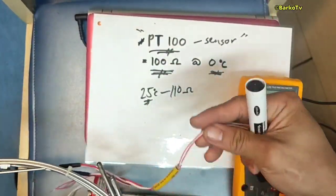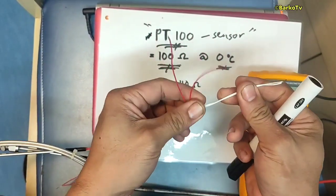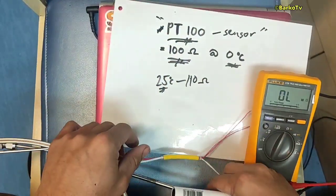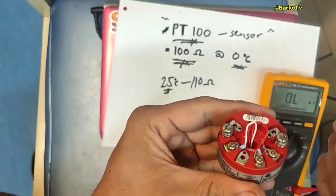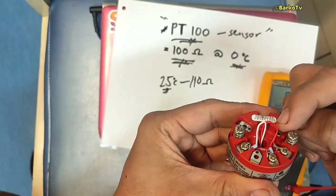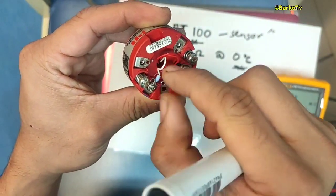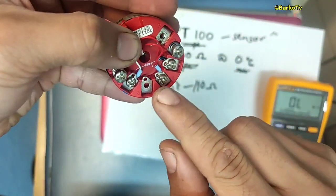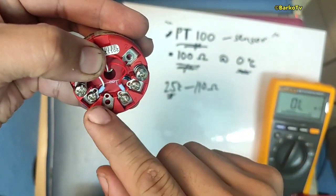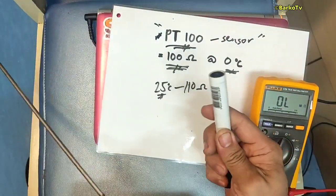This PT100 has four wires — the red wires are common and the white wires are common. This other one is three wires: one, two, three. The common is the two reds and one white, because the transmitter accepts three wires only, as shown in this diagram.